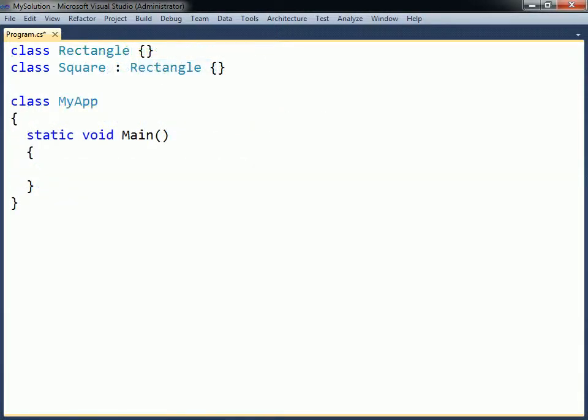C-sharp has a unified type system in that all data types directly or indirectly inherit from Object. This does not only apply to classes, but also to other data types, such as arrays and simple types.